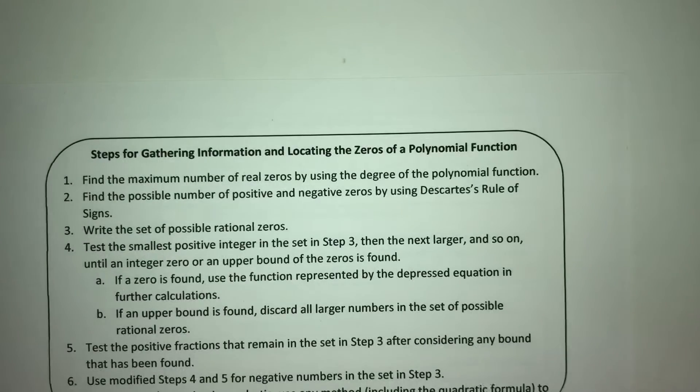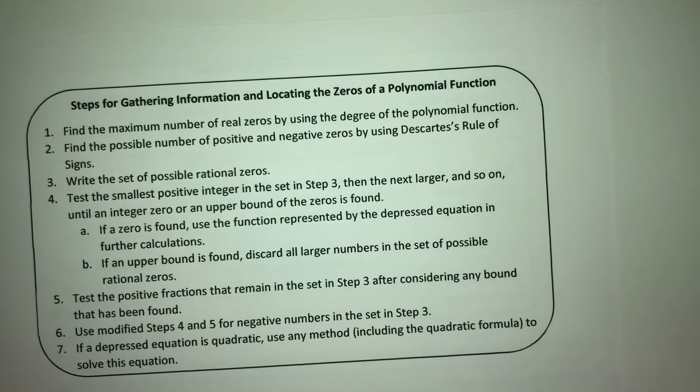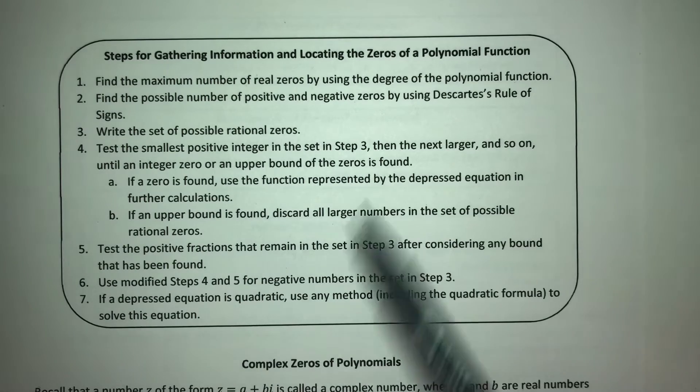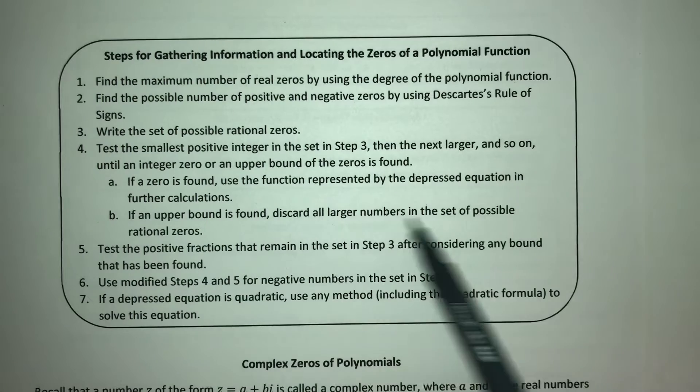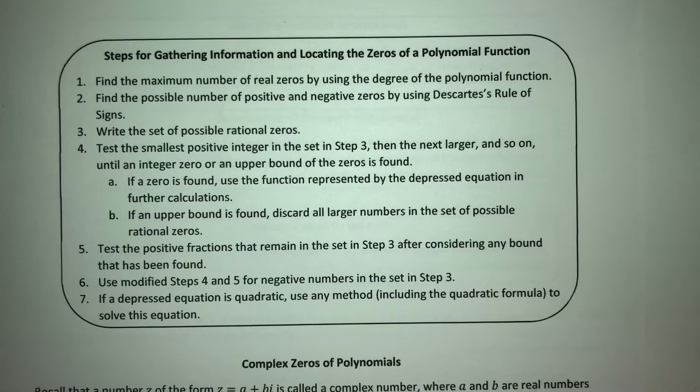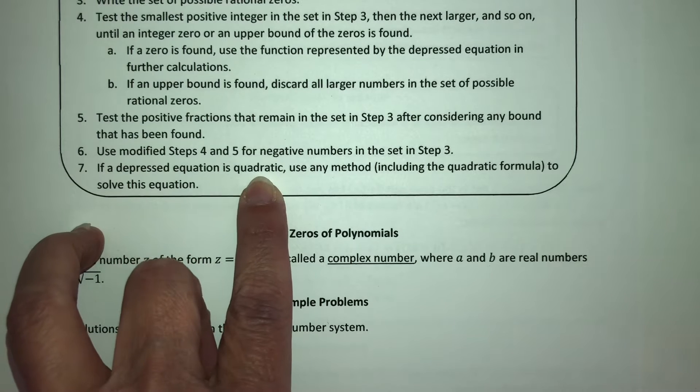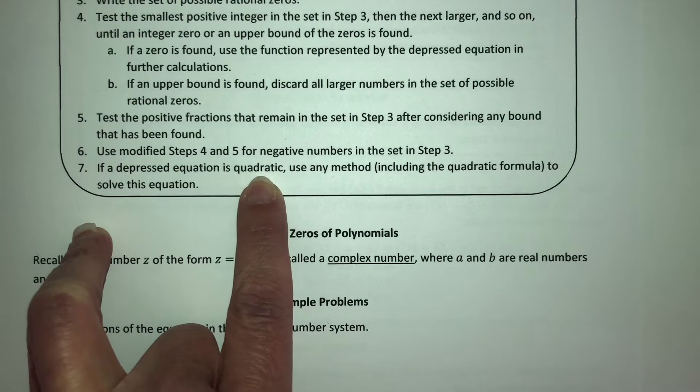So like I said, we're going to be using this to help direct us when we're finding our answers. This is just a summary of the things that we know. We want to find the maximum number of real zeros using the degree of the polynomial function. Find the possible number of positive and negative zeros using Descartes' rule of signs. Write the set of possible rational zeros, that's our p over q thing. Then we should start finding our upper and lower bounds. If we find the zero, we're going to use the depressed equation to do further calculations. If we find an upper bound, we discard everything larger and so on. And then we're going to repeat that for lower bounds. If we get down to a depressed equation that is quadratic, we have all kinds of methods for finding that solution, including the quadratic formula.